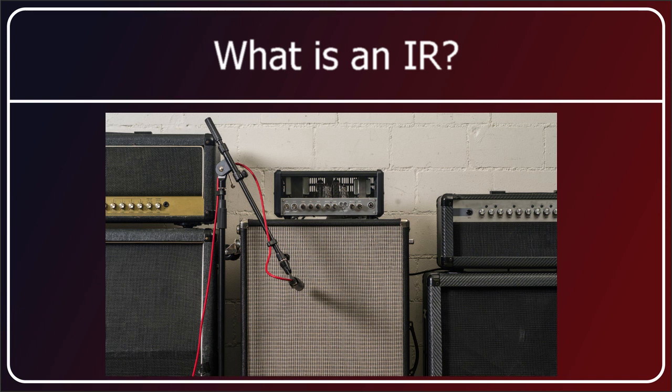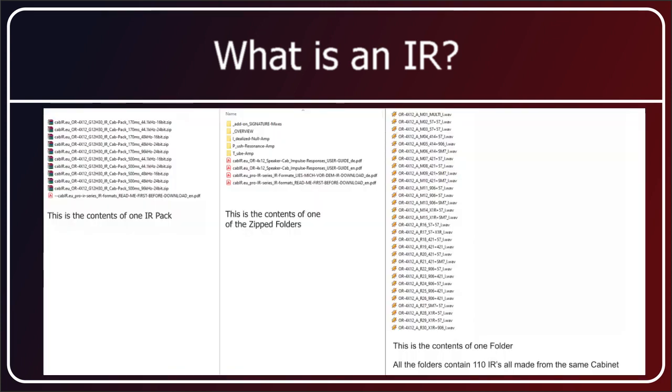So when you buy an IR, you don't get one IR, you generally get loads of them. They will have measured, say it's a 4x12 cabinet, they would have measured each speaker separately, then they would have measured all of the speakers from slightly further back. They will have used five or six different types of microphones in all different combinations. It goes on and on.